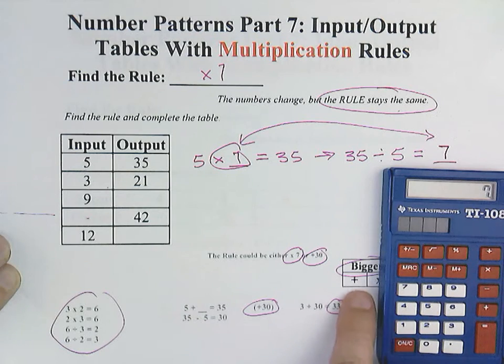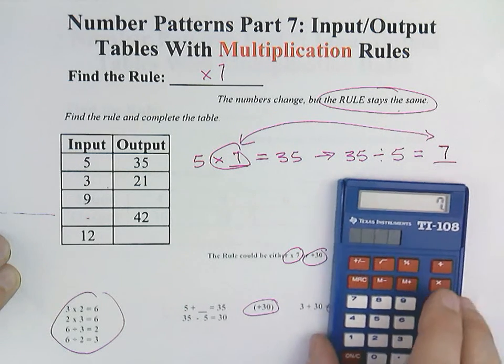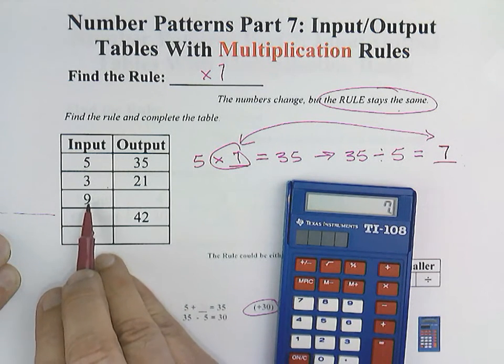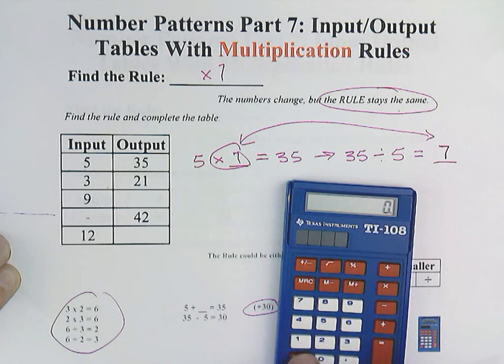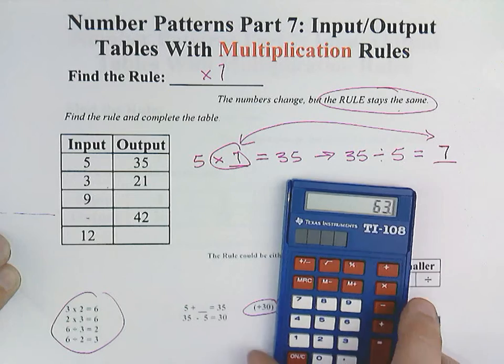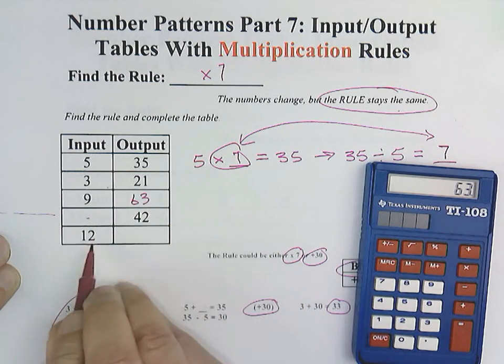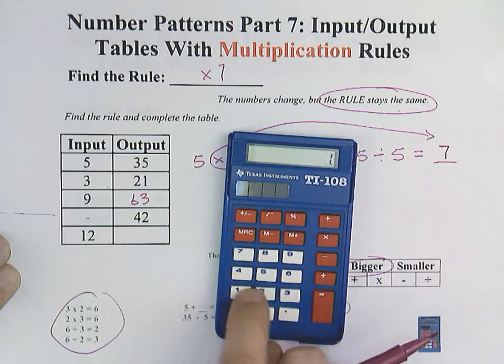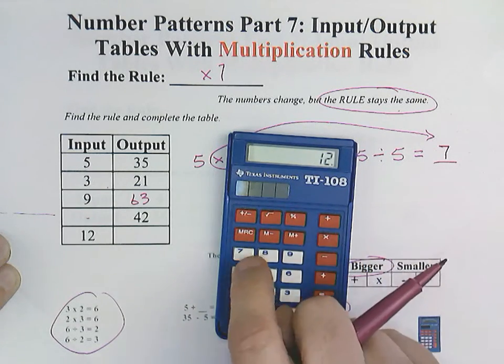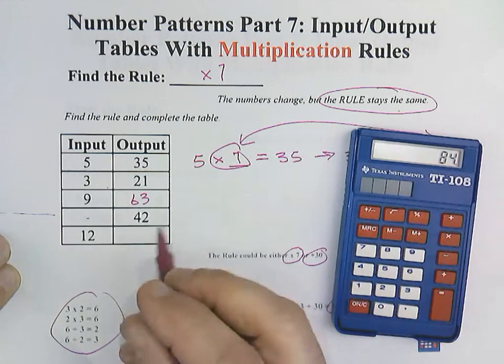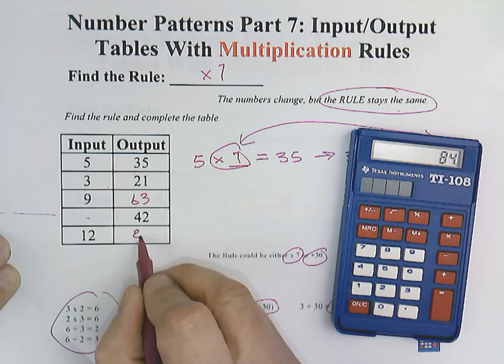So we've eliminated plus an addition rule. We know it's a times 7. Now we just have to use the rule for the rest of the table. So 9 times 7 would be 63. I'm going to skip this one for now. 12 times our rule of 7 would equal 84.